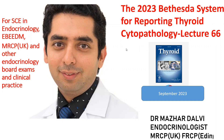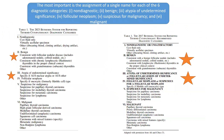This is the latest edition of the guidelines, which is a transition from the 2017 Bethesda System for Reporting Thyroid Cytopathology. There are some differences which have happened in the current grading, and that's what we're going to look at right away.